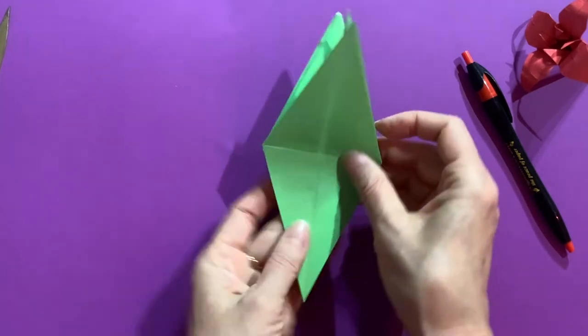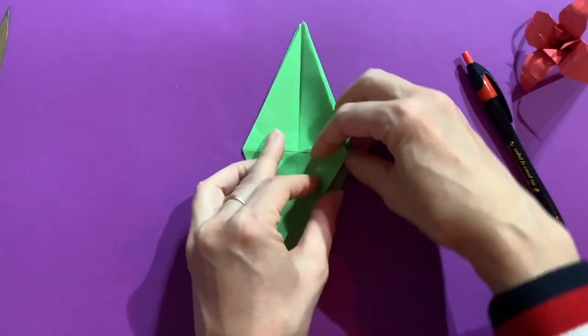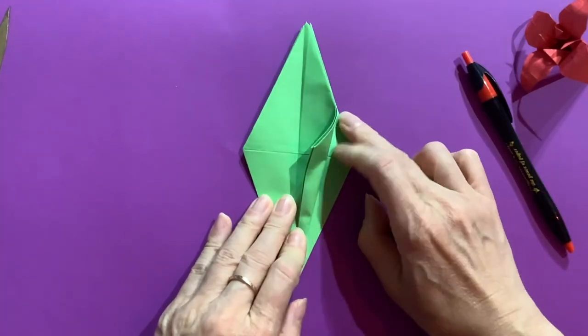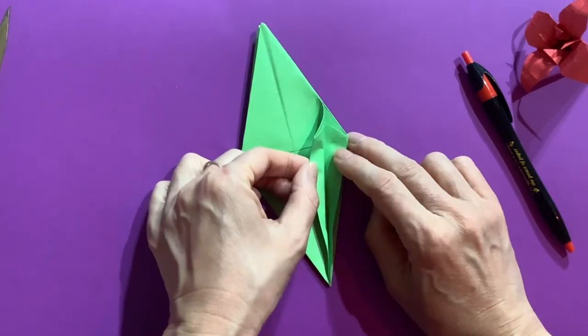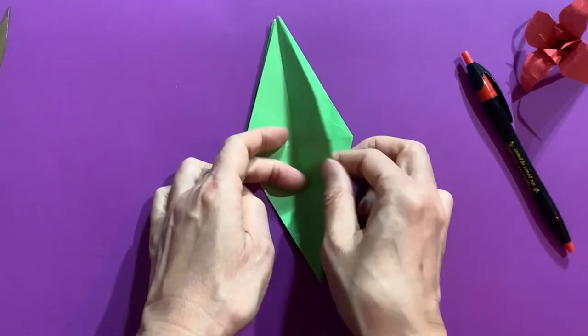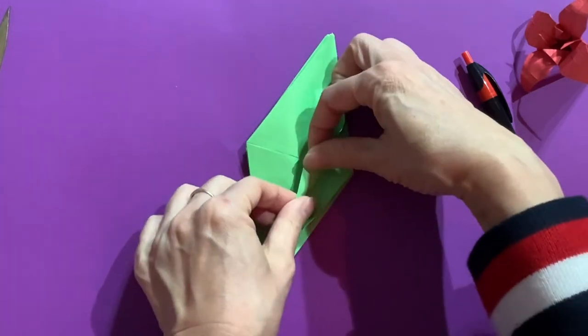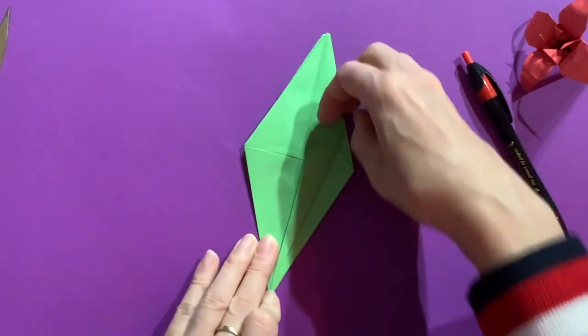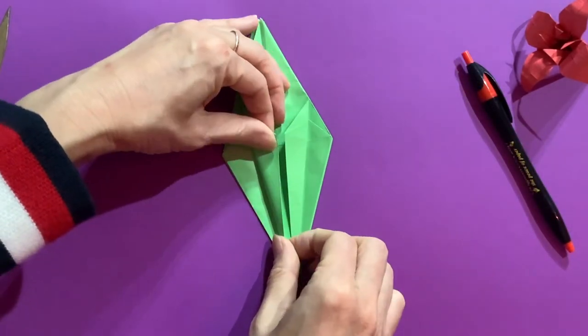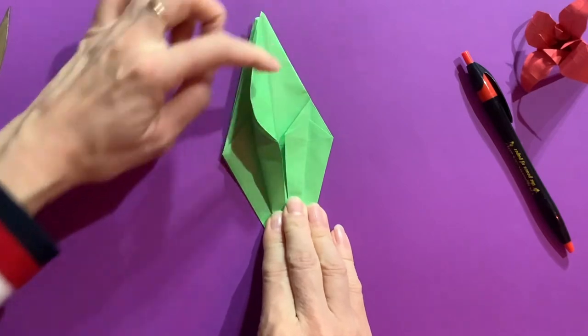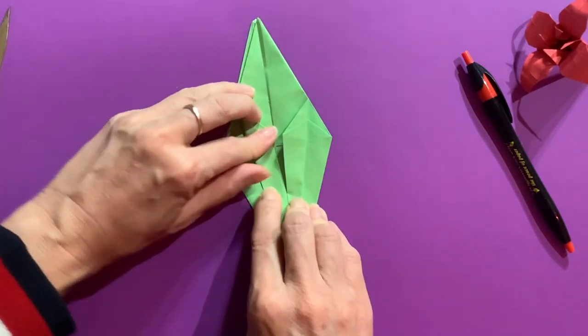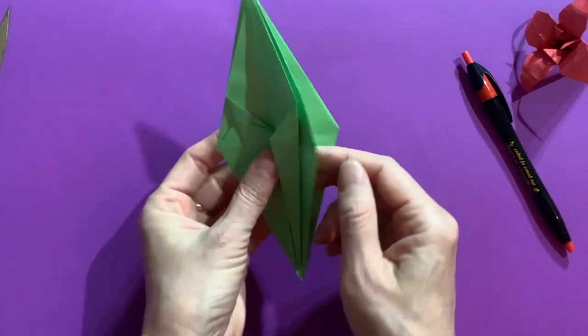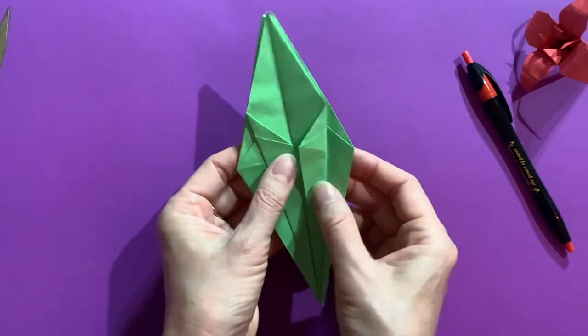Flip to the back side. And you do the same. Oops, look at that. I grabbed two flaps. No, no. Just one flap. One layer. And opposite side. Again, one layer.